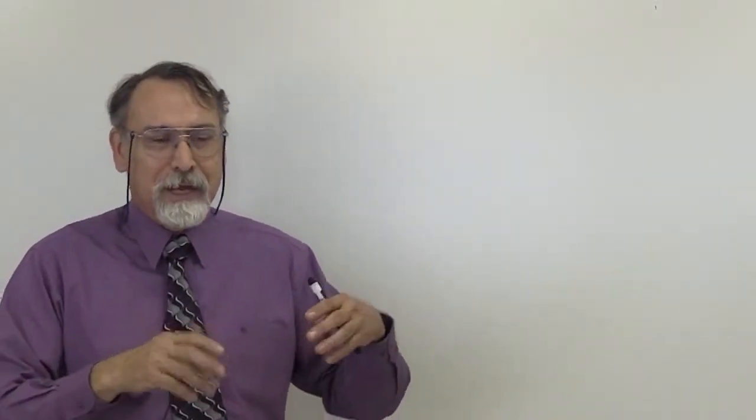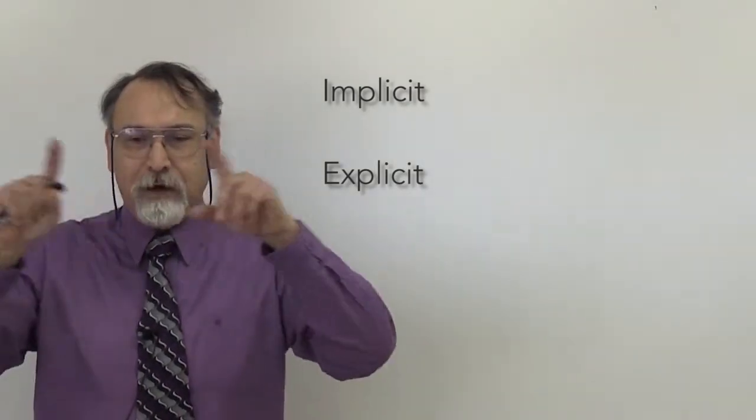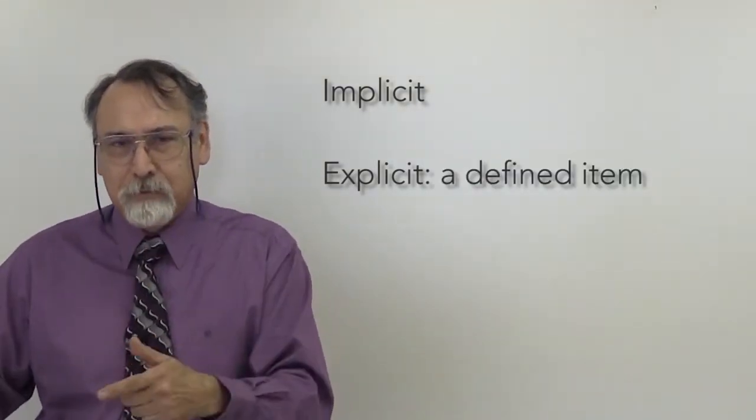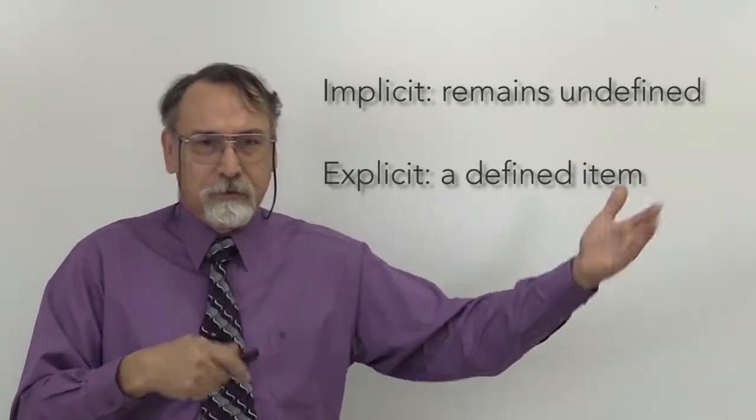Anytime you do SQL — when you do the select from where — that is a type of cursor because it's going and retrieving information. But you're not really giving that thing a name. Every time you run a statement, you got to type it in; you cannot call that item like a stored program. So there are what they call implicit cursors and explicit cursors. One is a defined item that you can give a name to and use; the other is not defined — it's like an anonymous item that every time you use it, you use it without giving it a name.